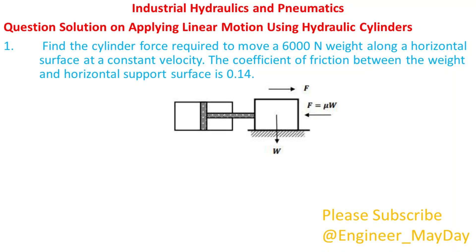Let's begin with this question. Find the cylinder force required to move a 6000 newtons weight along a horizontal surface at a constant velocity. The coefficient of friction between the weight and horizontal support surface is 0.14.